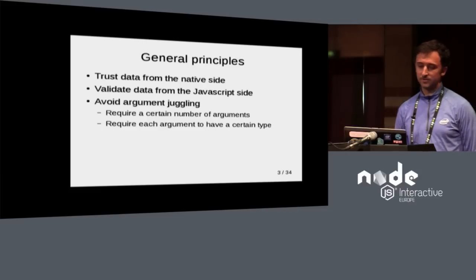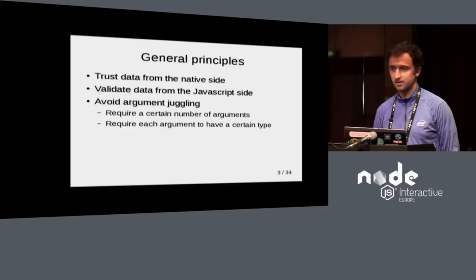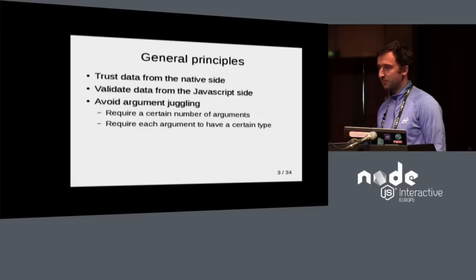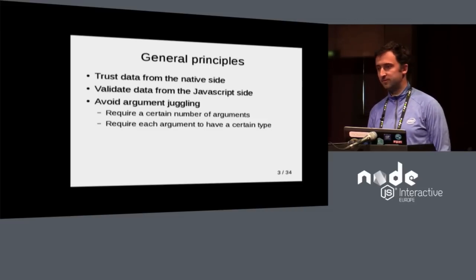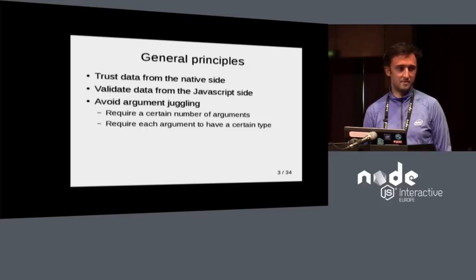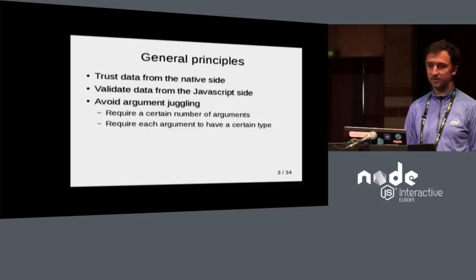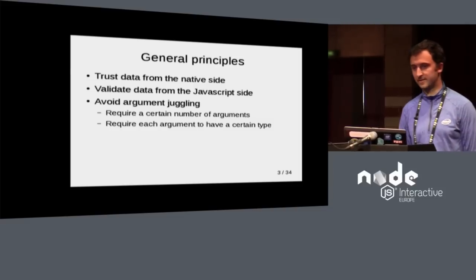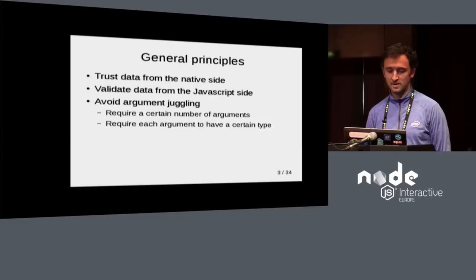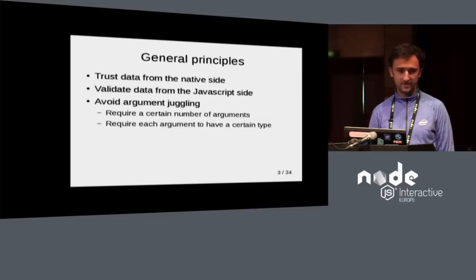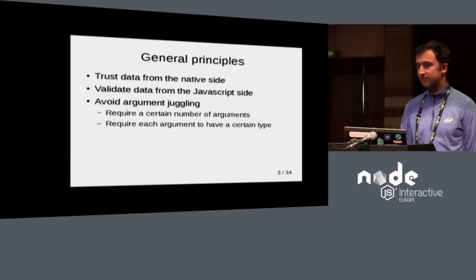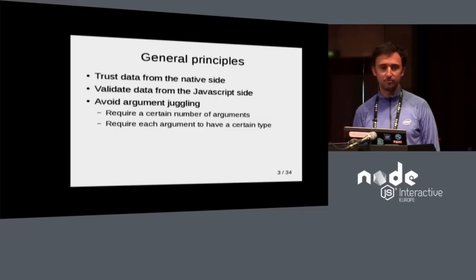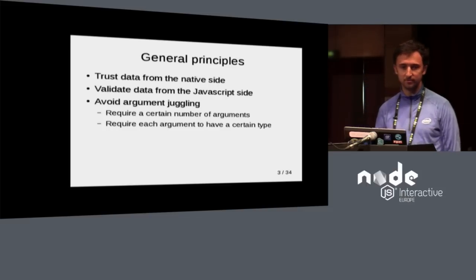In general, you want to assume the C library works as advertised — data coming from there is reliable. The only case where you have variations is if you have a string that can be null; then check if it's a string, and if not, set the JavaScript correspondent to null. But aside from that, you can pretty much trust all the data because C is strongly typed. From JavaScript, however, data coming in could be anything, so before you send it to C, make sure it is what you need it to be.